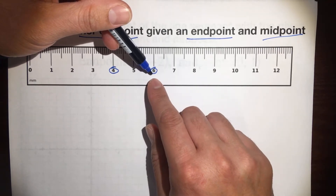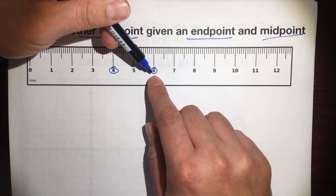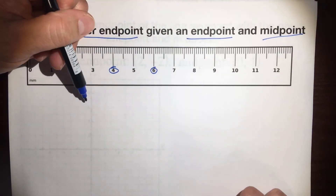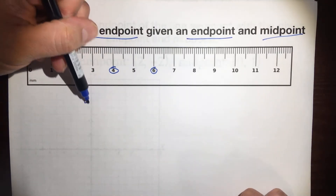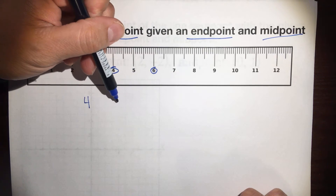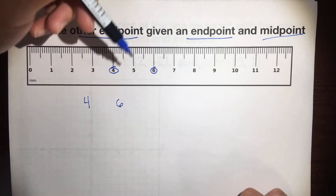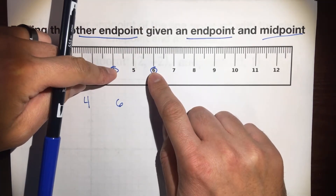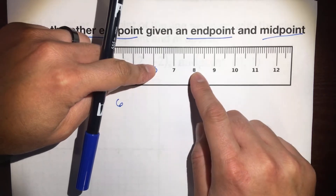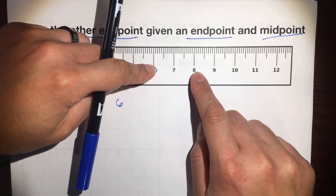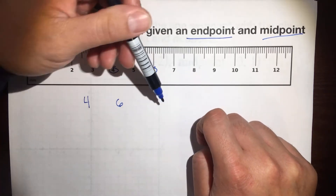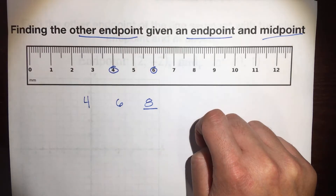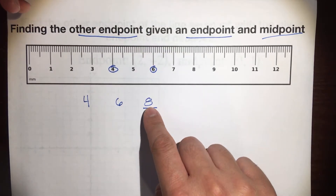Because you're standing there, you're like, we're supposed to meet here — where's my friend at? So, 4 is the endpoint and 6 is the midpoint, so where's that other endpoint? If you could just look at it, it's 2 units this way, so 2 units over there would be 8. So the answer — that other endpoint would be 8.